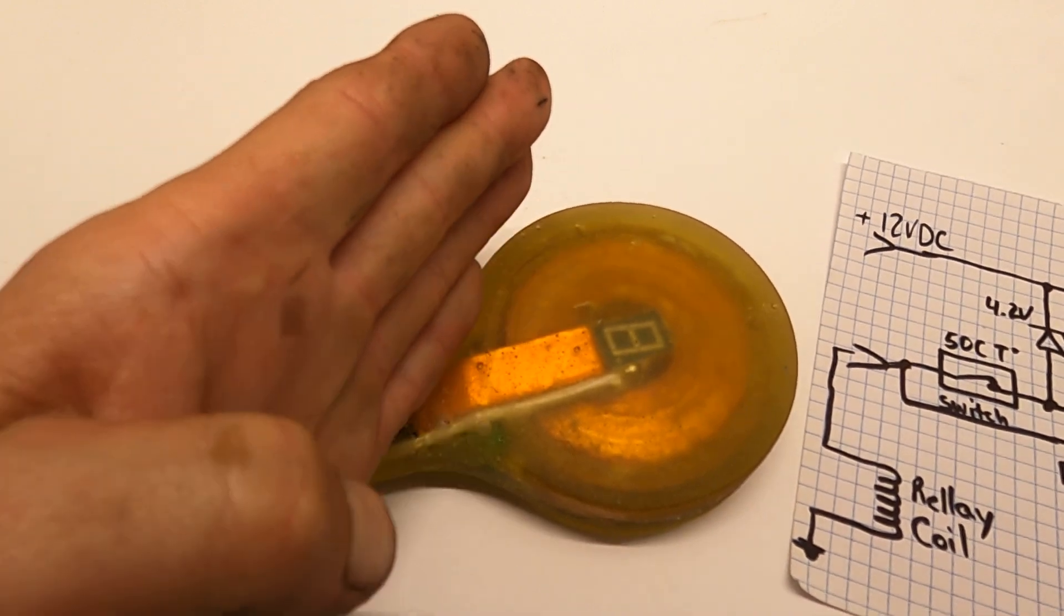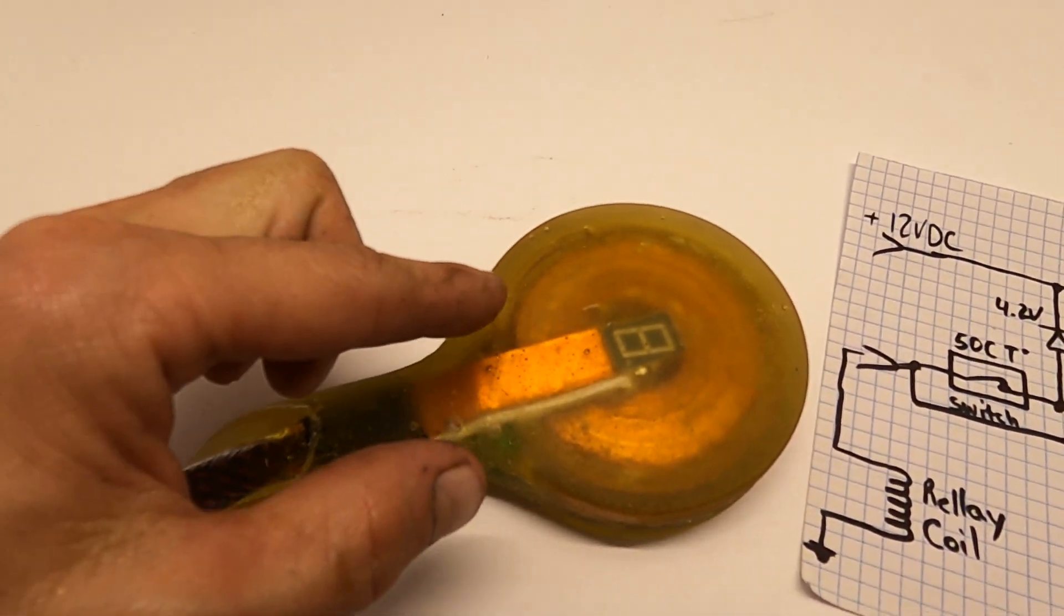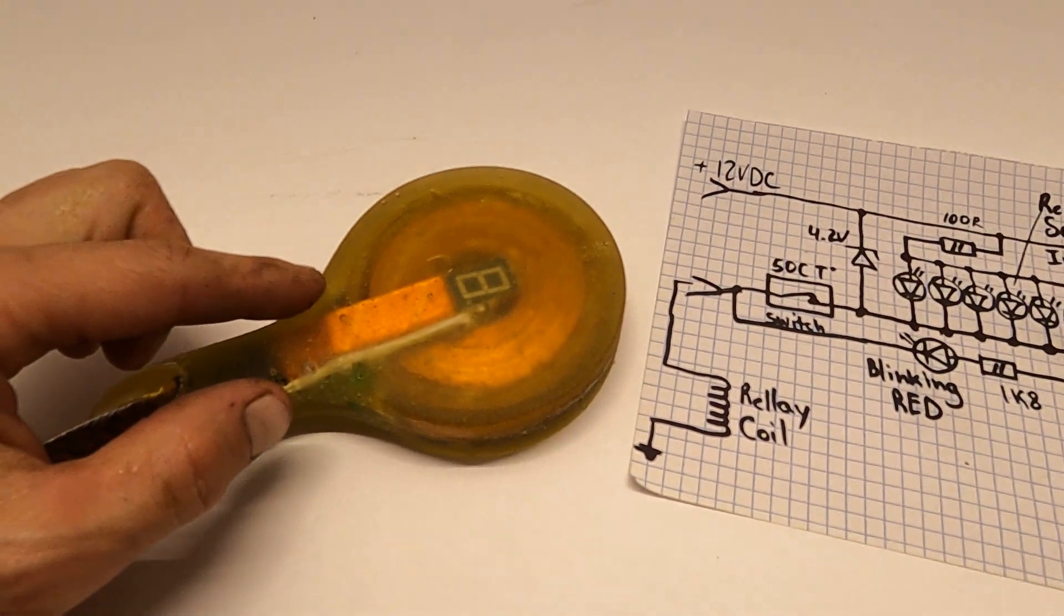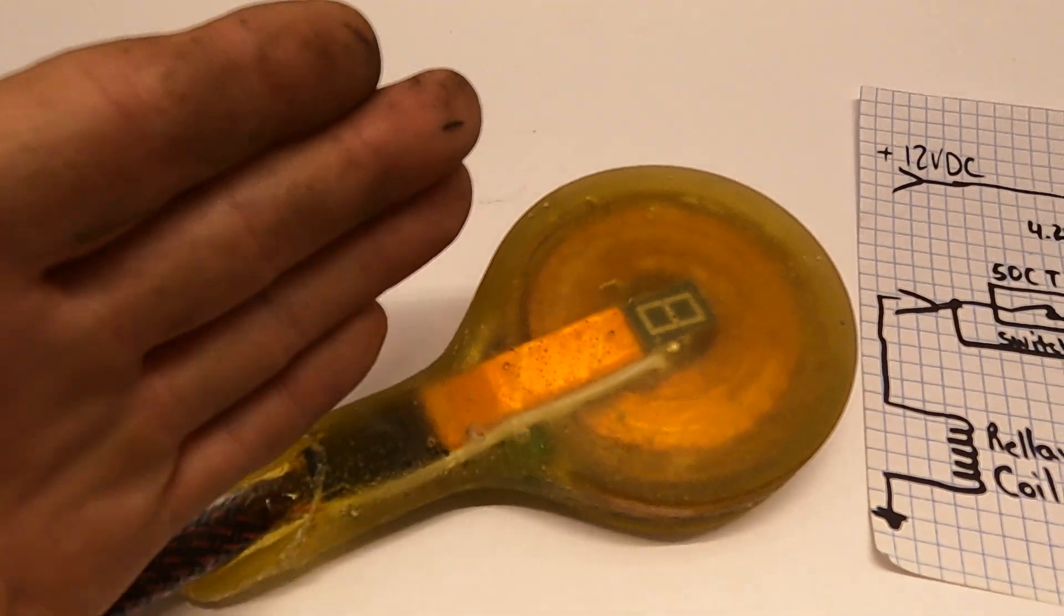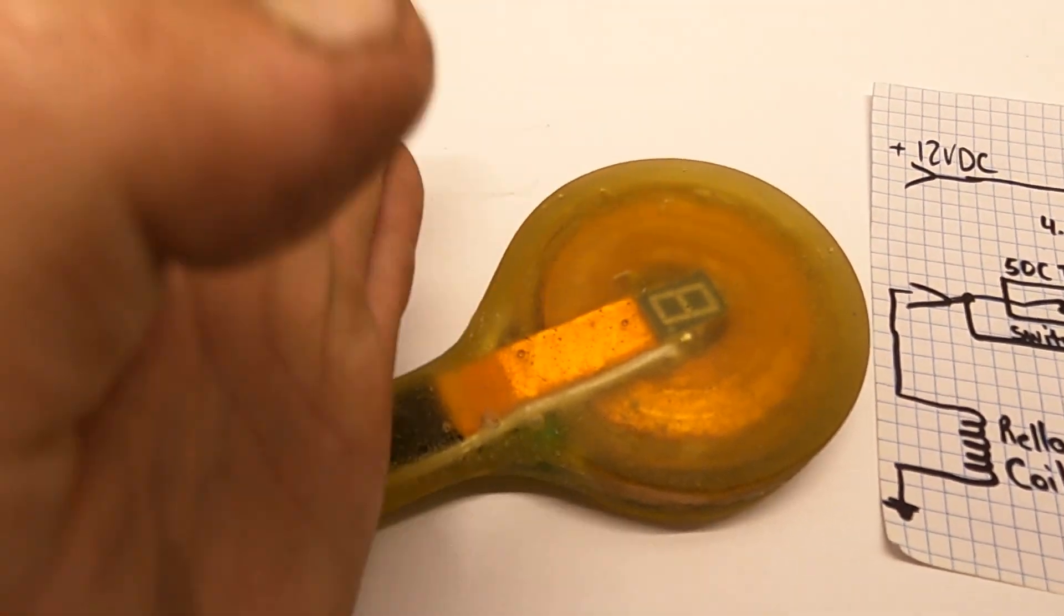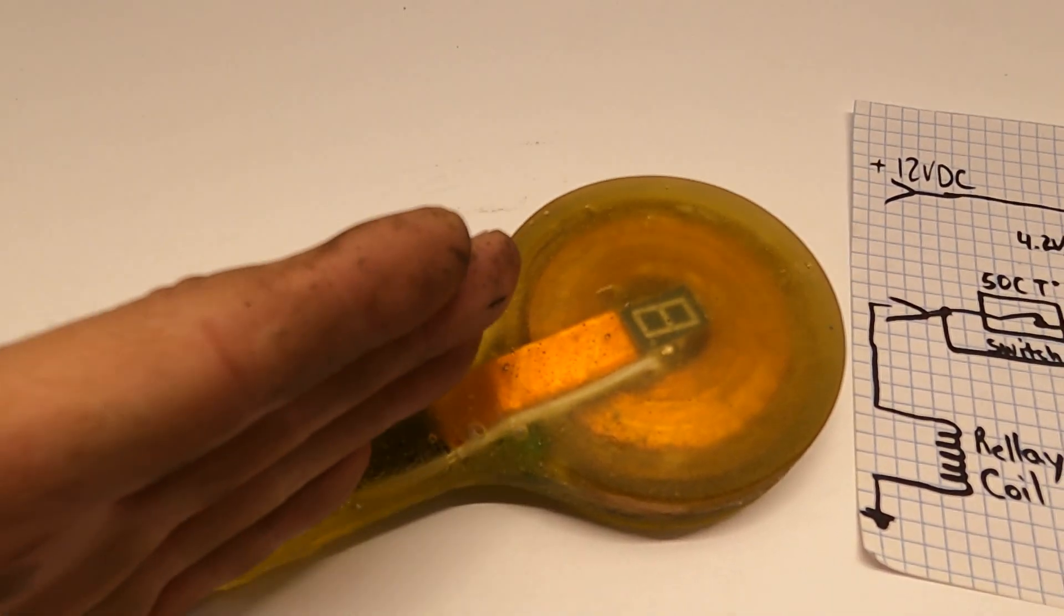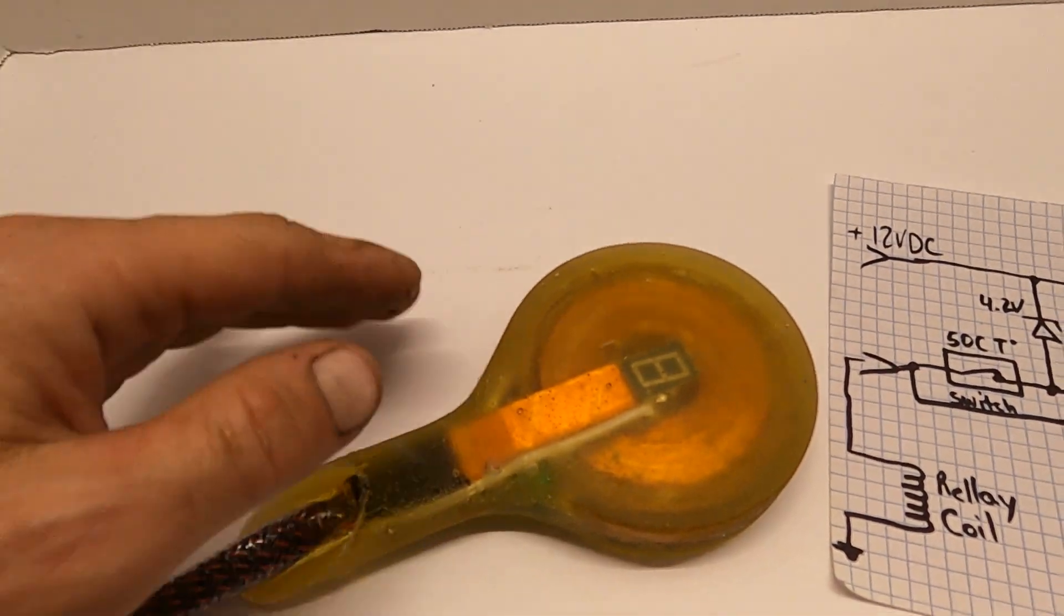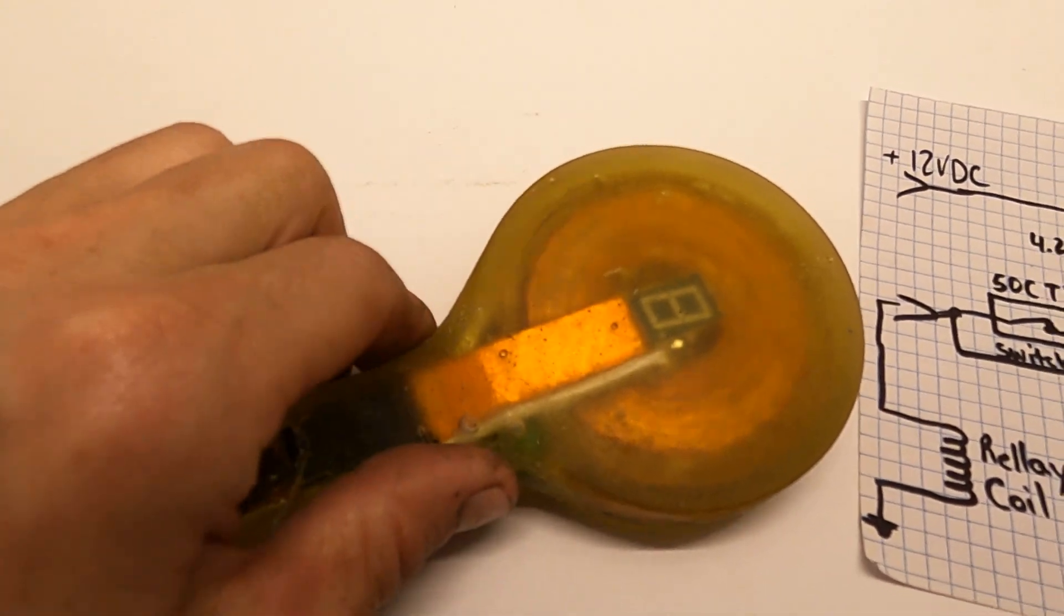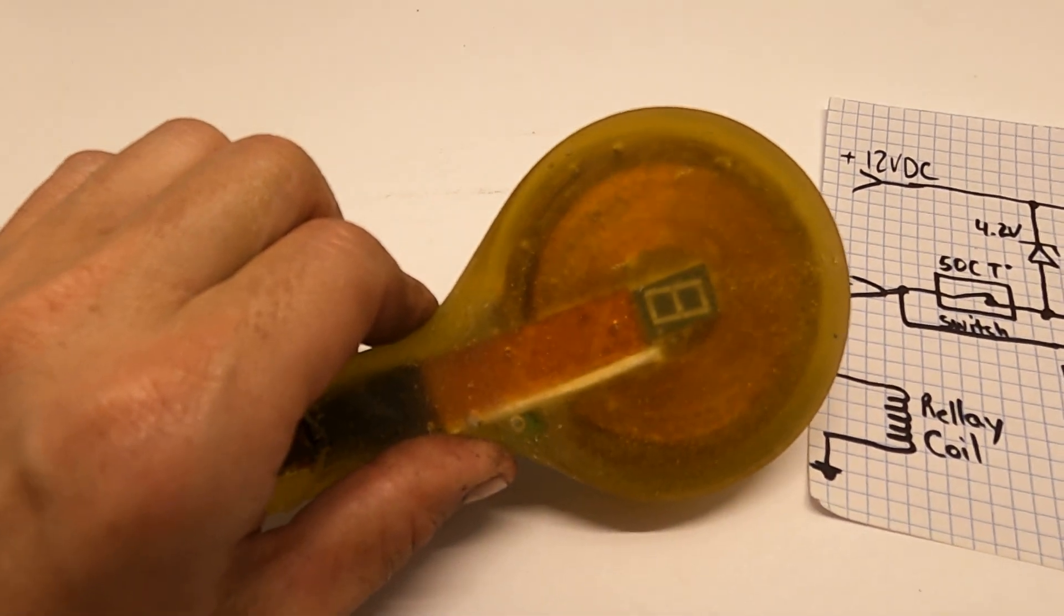The thermal switch is actually installed offset right here to the coil like this. It's a 50 Celsius thermal switch, but because it's offset to the angle, it's not laying flat with the coil.